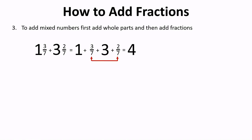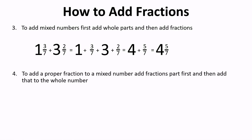And then, we add 3 sevenths and 2 sevenths to the 4. So, we have 4 and 5 sevenths. To add a proper fraction to a mixed number,